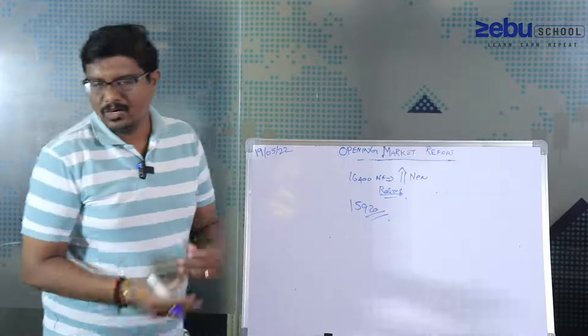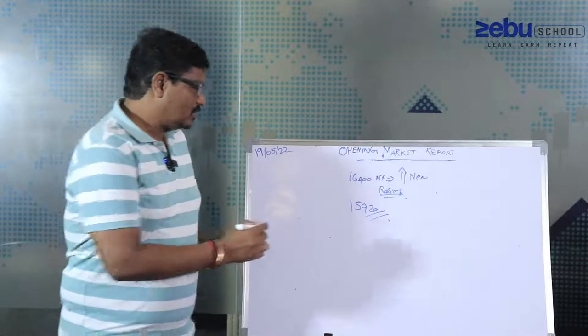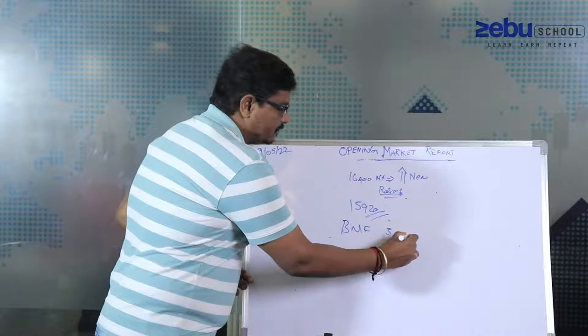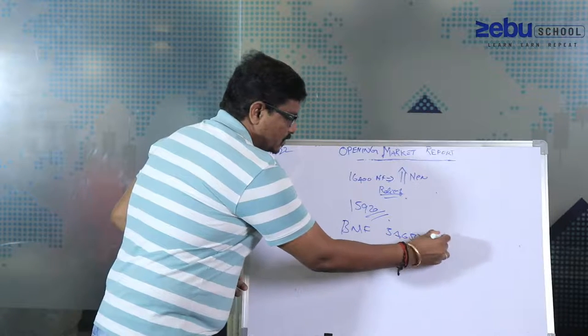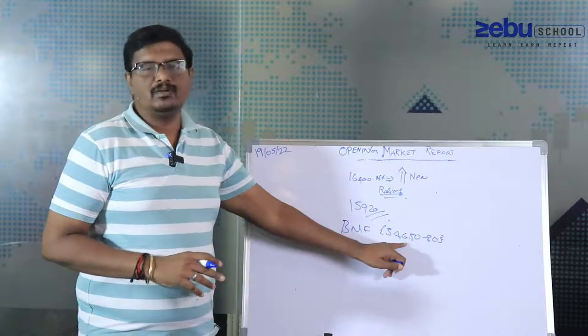If you ask me now what to do, look at the structure. Today is an expiry, and if you look at Bank Nifty, from our level of 34,650 to 800 is our zone. Even yesterday, same time when we had our live meeting, I said I am going short here.